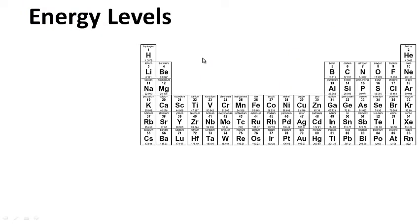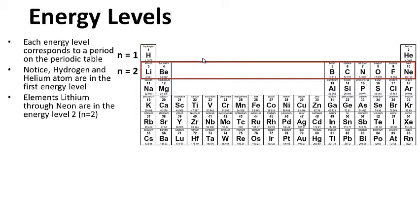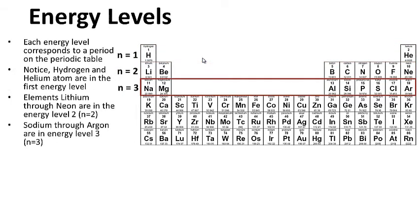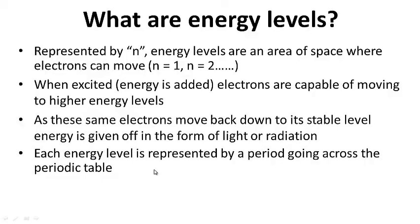Each energy level corresponds to a period on the periodic table. Notice hydrogen and helium are in the first energy level; lithium through neon are in the second; sodium through argon are in energy level three; potassium through krypton are in energy level four, and so forth through N equals five and six. For your notes: what are energy levels? Question on the left-hand side, answer on the right-hand side. Go ahead and pause this while you write.